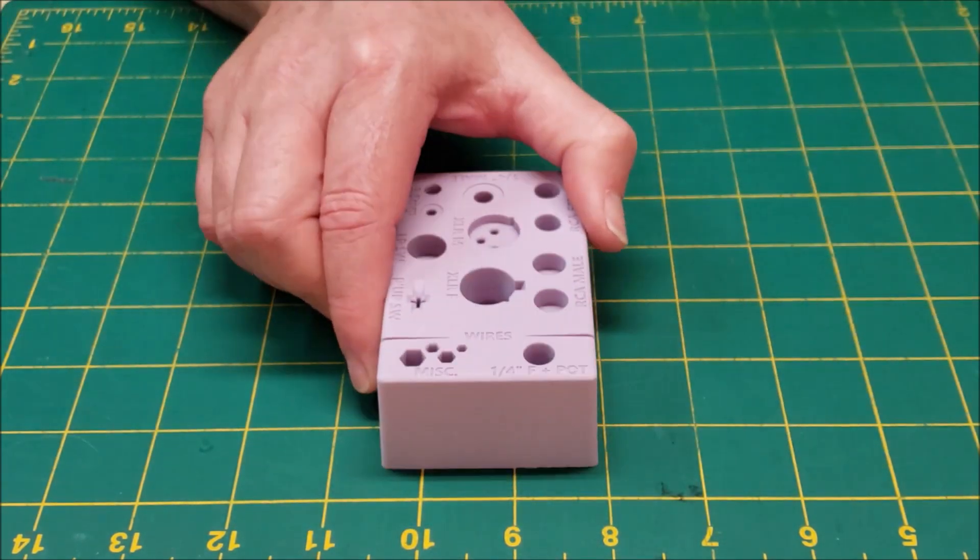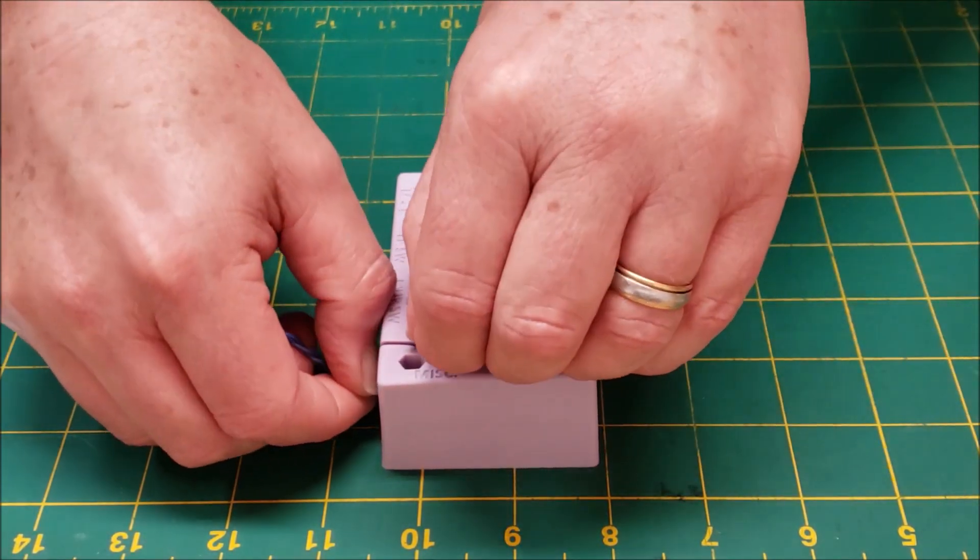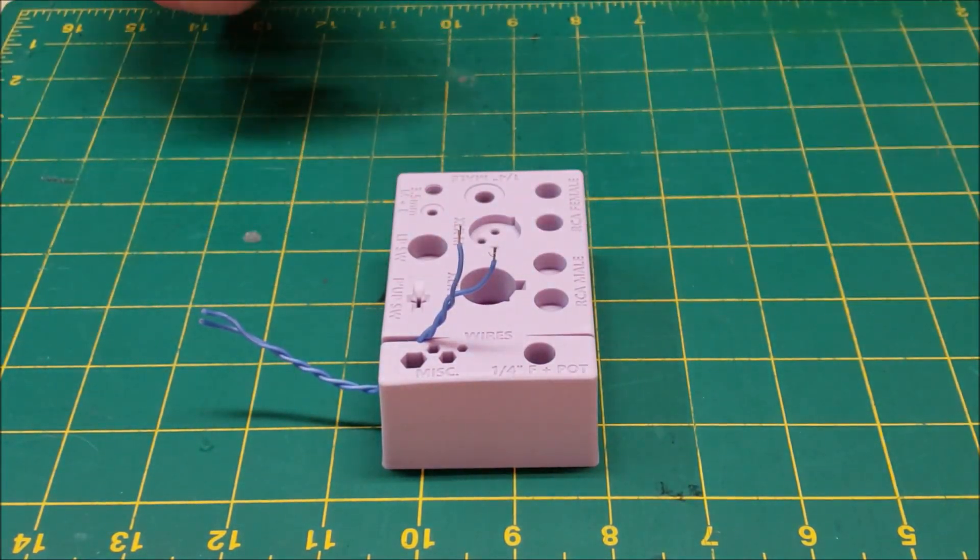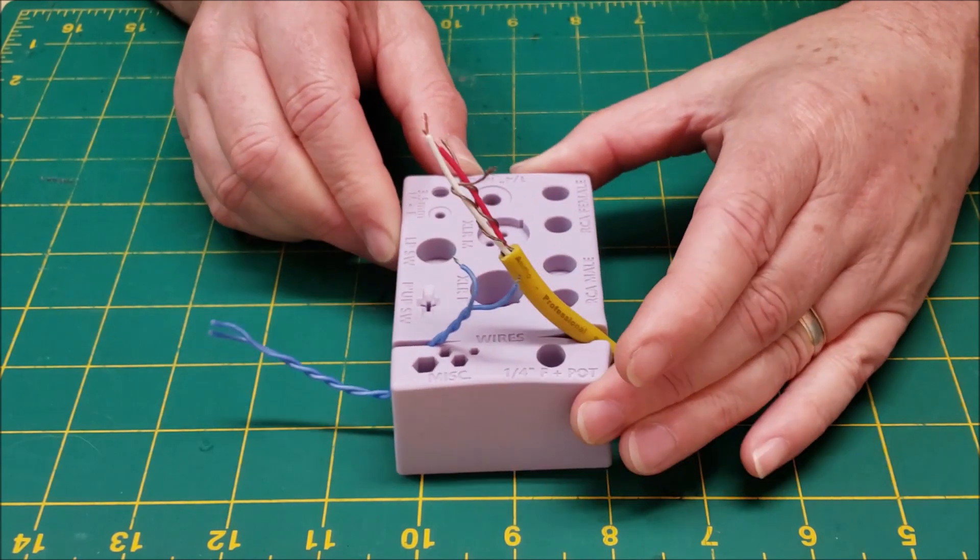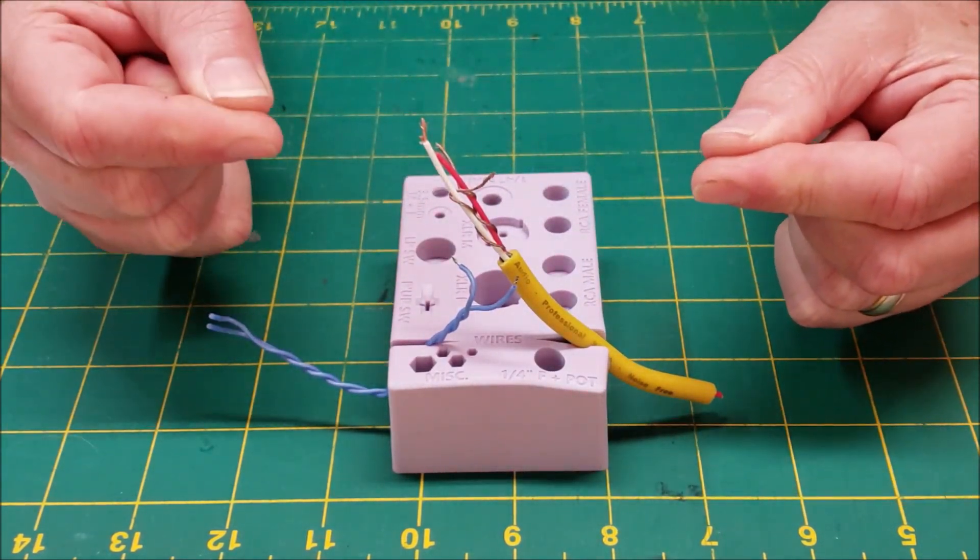My favorite thing about the hot holder is these wire slots. Use them to tin individual wires, or you can do a bunch at a time, or grab a multi-pair cable like a microphone cable and solder them all up using both hands.